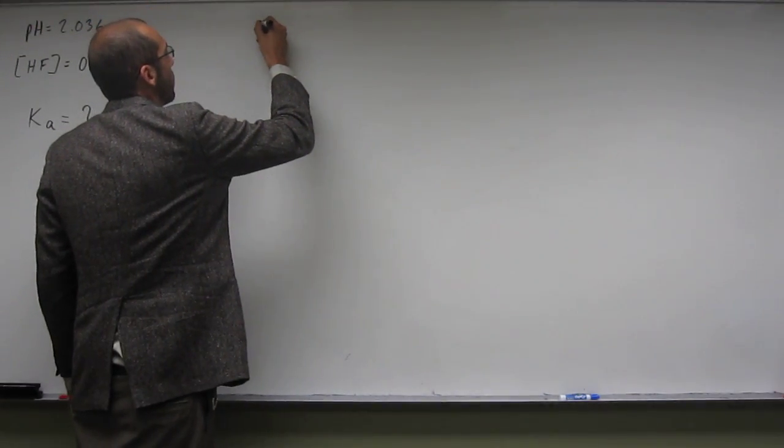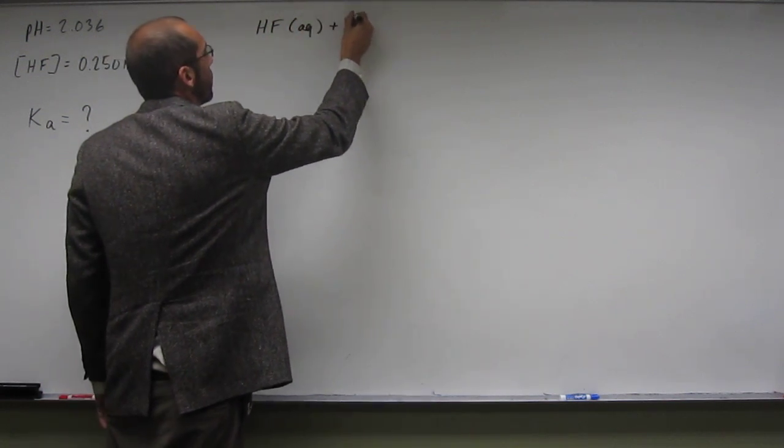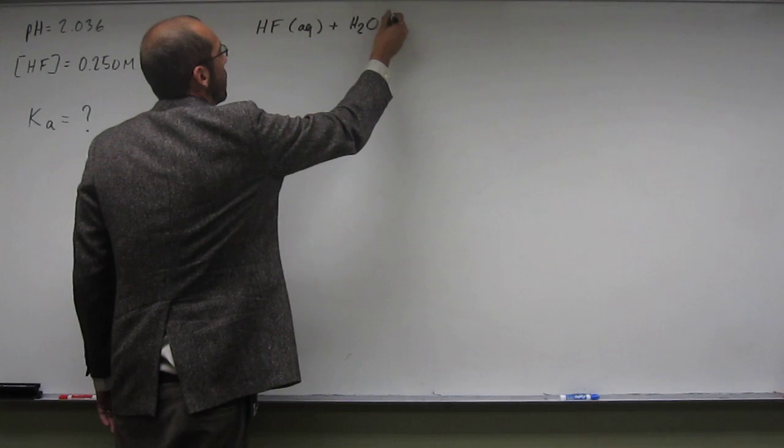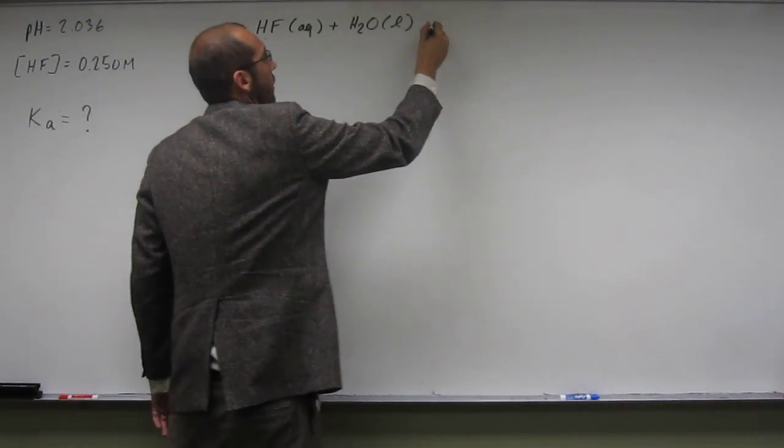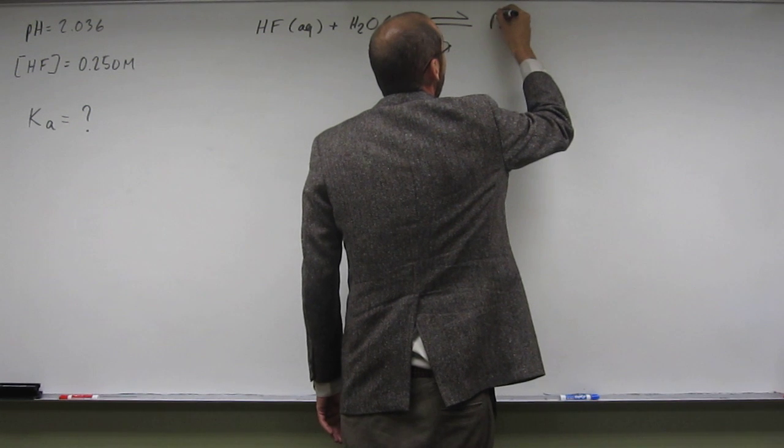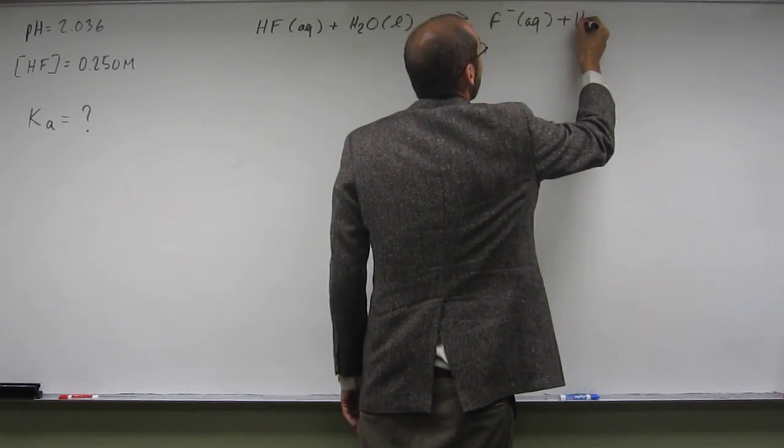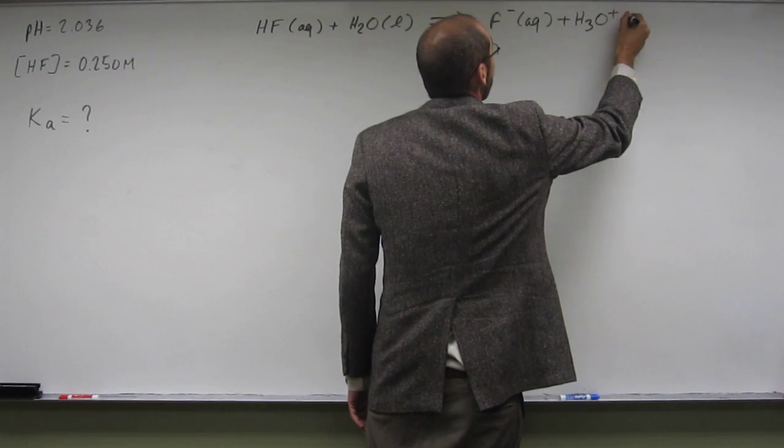So let's write that out first. HF aqueous plus H2O liquid is an equilibrium with F minus aqueous plus H3O plus aqueous.